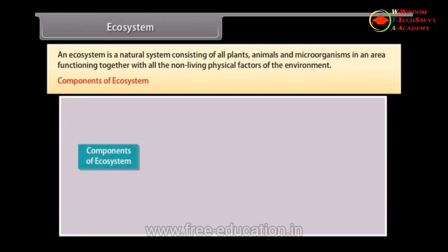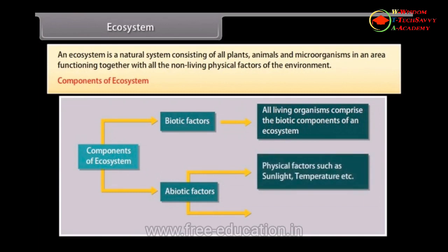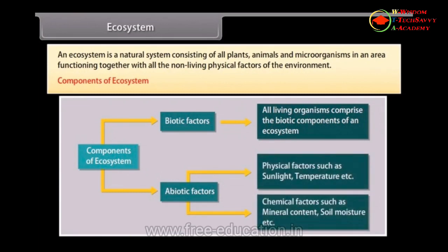Components of Ecosystem: An ecosystem comprises the following two components. 1. Biotic factors, including all living organisms. 2. Abiotic factors, which include physical factors such as sunlight and temperature, and chemical factors such as mineral content and soil moisture.